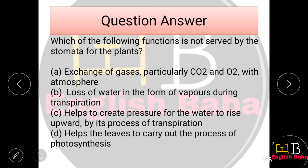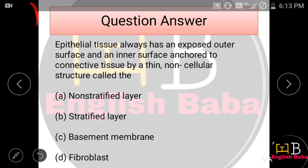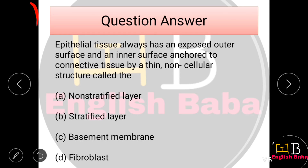Epithelial tissues always have an exposed outer surface and an inner surface attached to connective tissue by a thin non-cellular structure. What is that structure called? The correct option is C — basement membrane.